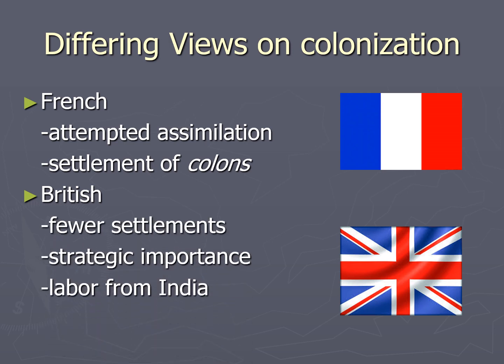Conversely, the British generally had fewer settlers and cared little if indigenous Africans adopted their culture. The areas where the British settled were more about their locations — note the British are primarily in southern Africa and eastern Africa, both on pivotal points on important waterways. Southern Africa links the Atlantic and Indian Oceans; eastern Africa links the Red Sea to the Indian Ocean, and after the Suez Canal was built, the Mediterranean to the Red Sea. Britain used control of these places to solidify its domination of the seas.